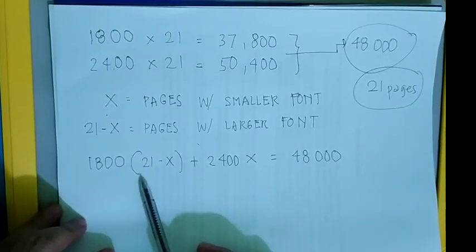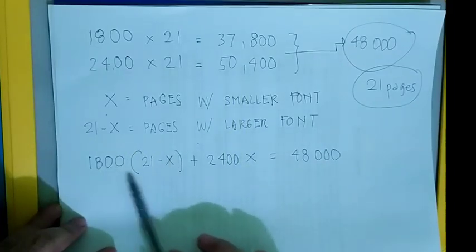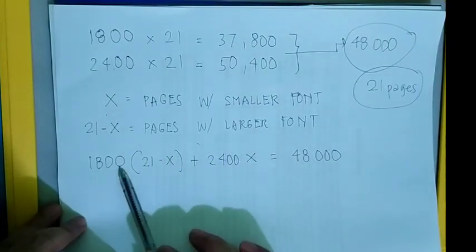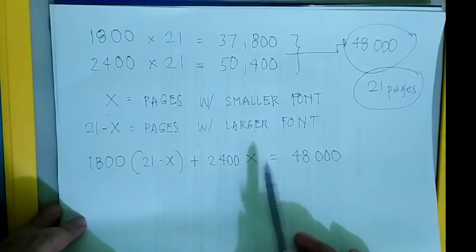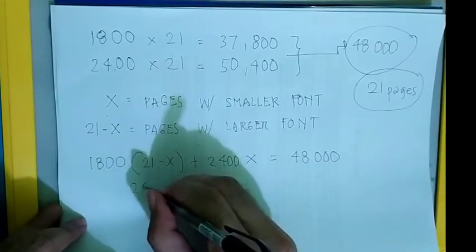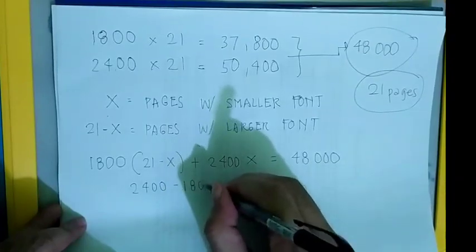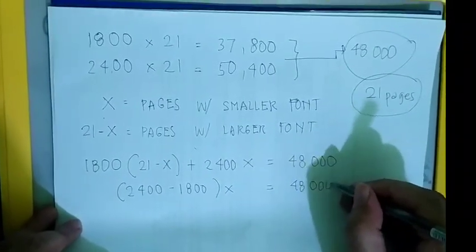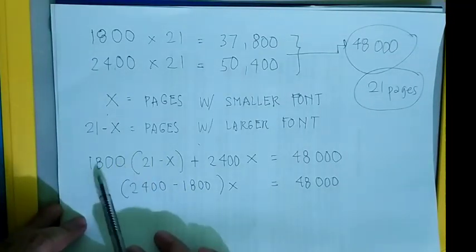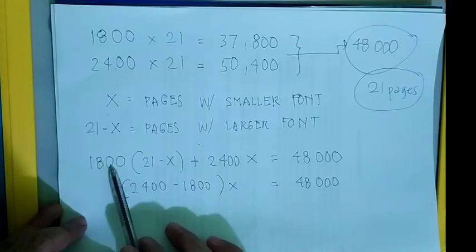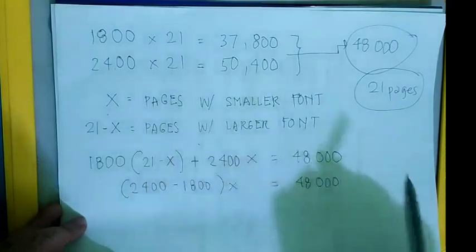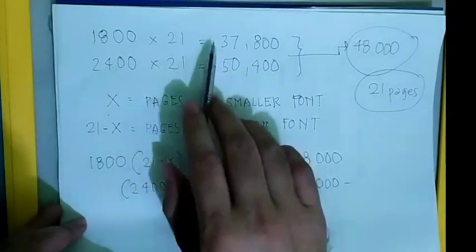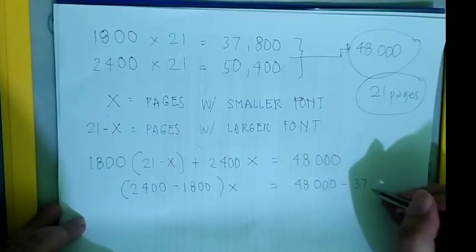We have one equation, one unknown. Multiplying out: 1,800 times (21 minus x) gives 1,800 times 21 minus 1,800x, and 2,400 times x. Combining the x terms gives (2,400 minus 1,800)x. The constant 1,800 times 21 we already know is 37,800, which transfers to the other side as negative 37,800.